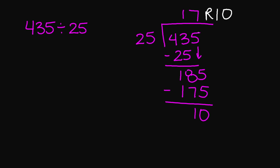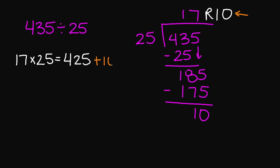Now to check my answer, I'm going to multiply 17 times 25 because you're multiplying your quotient times your divisor, and that's going to equal 425. Since I do have a remainder of 10, I need to add my remainder. So 425 plus 10 equals 435, which is the same answer as your dividend.